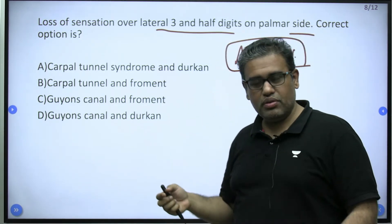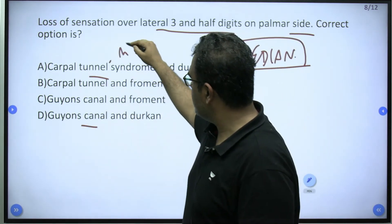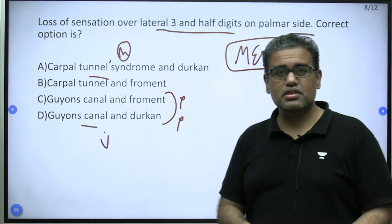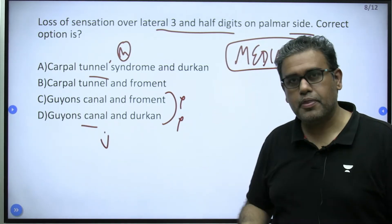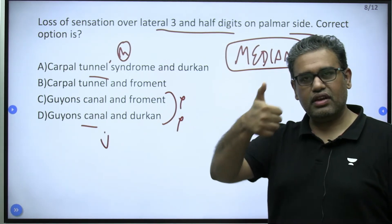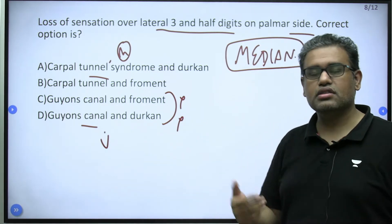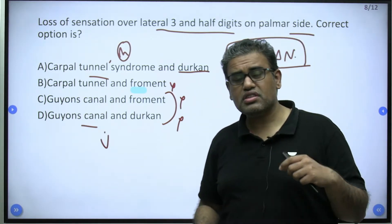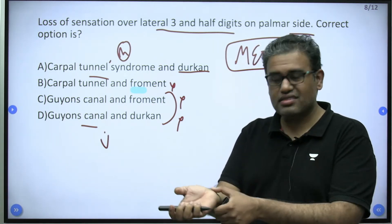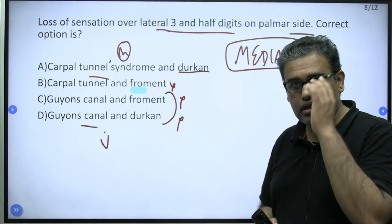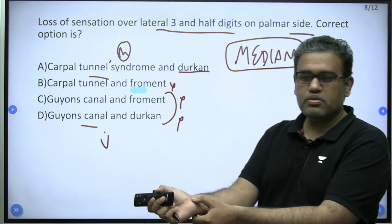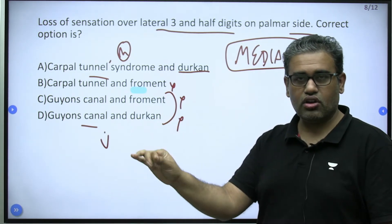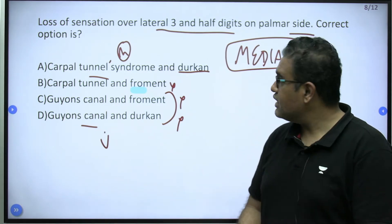Loss of sensation over the lateral 3 and a half digits on the palmar side — the correct option is the median nerve. The cutaneous supply of the palmar lateral 3 and a half digits is clearly the median nerve. Guyon's canal is for the ulnar nerve. For options: carpal tunnel is for the median nerve, Guyon's canal is for the ulnar nerve — those two cut automatically. Froment's sign has been asked multiple times: when pulling paper, instead of using adductor pollicis, the patient flexes the interphalangeal joint using FPL — that is Froment's test for the ulnar nerve. Durkan's test is a modification of the tunnel sign where you compress the carpal tunnel in the midline for 30-40 seconds and ask the patient about sensory or motor changes in the hand.